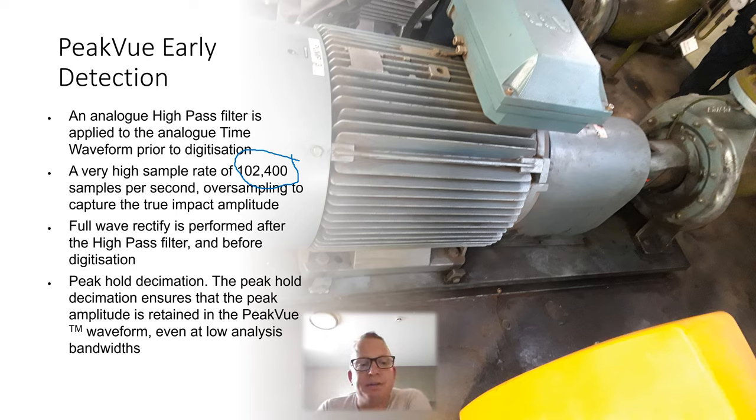Then they rectify it, digitize it, peak hold decimation, which by the name Peak View comes from where it holds a peak value and ensures the peak value is retaining. It gives you some really crisp clear data.